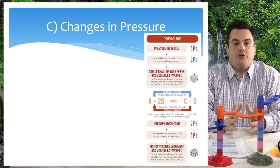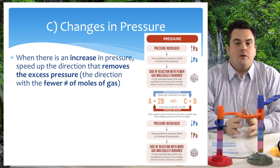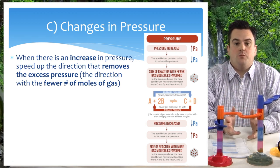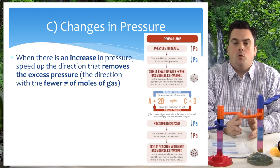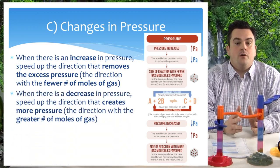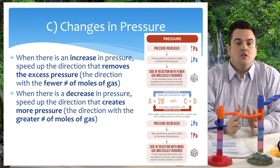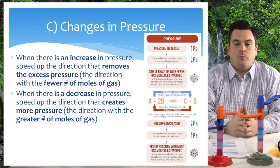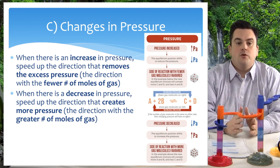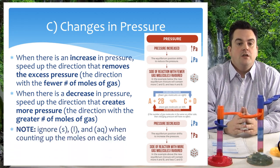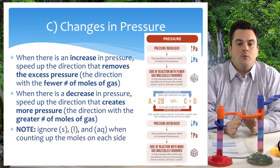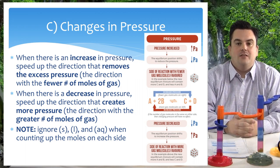Changes in pressure. When there is an increase in pressure, speed up the direction that removes the excess pressure — this is the direction with fewer moles of gas. When there is a decrease in pressure, speed up the direction that creates more pressure — this is the direction with a greater number of moles of gas. Note: ignore solids, liquids, and aqueous species when counting up the number of moles on each side.